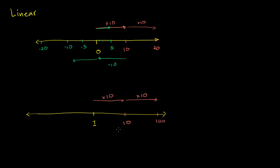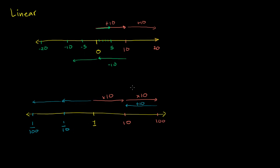Moving to the left that distance means dividing by 10. Starting at 100 and moving left gets me 10; moving left again gets me 1; moving left again gives me one tenth; and once more gives me one over 100. The general idea is: however many times I move that distance to the right, I'm multiplying my starting point by 10 that many times.